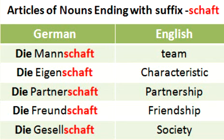Let's go through some examples. The first example is 'Mannschaft,' which means 'team' in English. Since this noun has the suffix '-schaft' at the end, it is a feminine noun and takes the article 'die.'